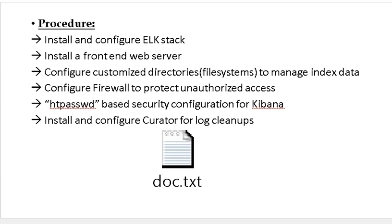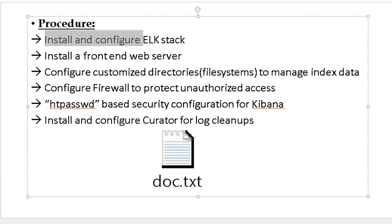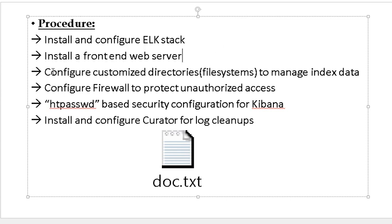Moving to the practical section — this guide will show you how to deploy and configure the ELK stack using an automated installation with an Ansible playbook. The playbook will do all these steps: first, configuring the ELK stack; second, installing a front-end web server; and third, configuring customized directories to manage and index the data.